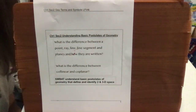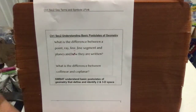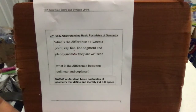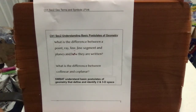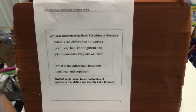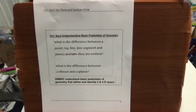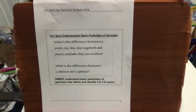In this lesson, we're in Chapter 1, Section 2. We are going to be discussing points, rays, lines, line segments, planes, and how they're written, what their intersections could be, and what the difference is between collinear and coplanar.